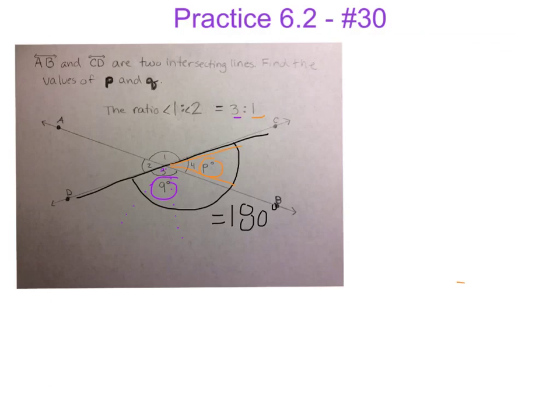So what we're going to do is we're going to say, okay, well if this is a 1 value, or x value for angle 4, that means that there are also 3x values for angle 3. Now we can write that as 4x, but we can also write that as our measure of p plus the measure of q is equal to 180 degrees.